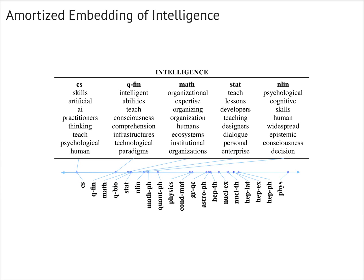Here is a comparison of the different meanings of 'intelligence' uncovered by an amortized embedding model fitted to the archive abstracts. In computer science, the most similar words include skills, artificial, and AI. In quantitative finance, we have intelligence and abilities. And in nonlinear methods, the most similar words include psychological, cognitive, and skills.